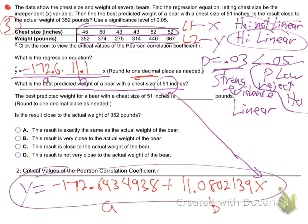Are you tracking? This is going to become really important — everybody hearing me on this? You do have to look at the p. The p is low, reject the null. Which means we believe there's strong evidence that these do have a linear relationship — bear chest size and weight. So that means you can use the formula. This equation is therefore valid. It's trustworthy. You can use it.